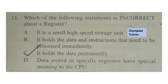Question 13: Which of the following statements is incorrect about a register? A. It is a small high speed storage unit. B. It holds the data and instructions that need to be processed immediately. C. It holds the data permanently. D. Data stored in specific registers have special meaning to the CPU. The incorrect statement is option C.